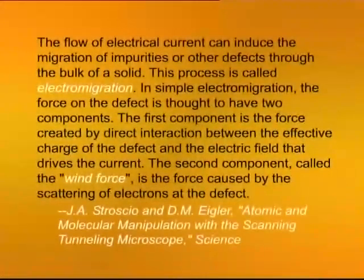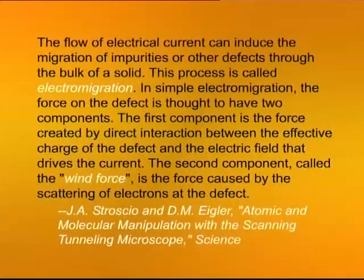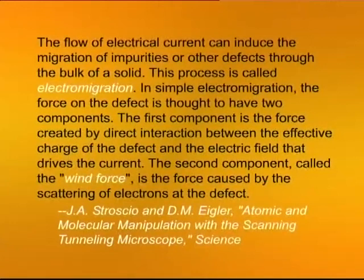The flow of electrical current can induce the migration of impurities or other defects through the bulk of a solid. This process is called electro-migration. In simple electro-migration, the force on the defect is thought to have two components. The first component is the force created by direct interaction between the effective charge of the defect and the electric field that drives the current. The second component, called the wind force, is the force caused by the scattering of electrons at the defect. This text is taken from a scientific journal and it's accurate in two ways: stylistically accurate in its precise use of language, and technically accurate in its use of specialized terms such as electro-migration, charge, electric field and scattering, whose meanings are based on the context of a technical discipline.